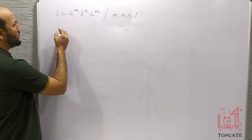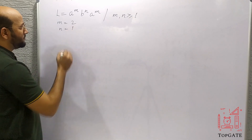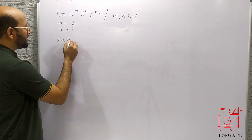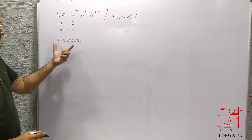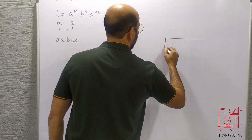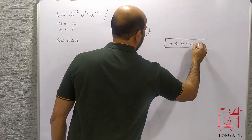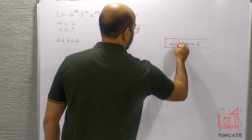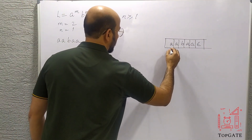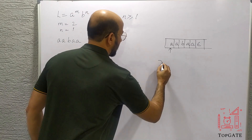Let's take an example string. Suppose M equals 2 and N equals 1. Then the string we get is A, A, B, A, A. I'll place that string on the input tape: A, A, B, A, A, then epsilon. Currently the pointer is on the first A, and I'll set up a stack containing Z0 as the initial top stack element, meaning the stack is currently empty.